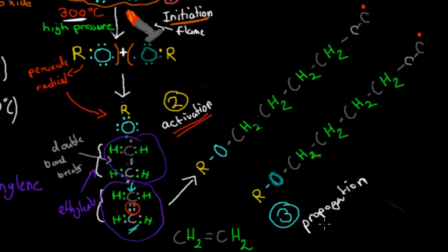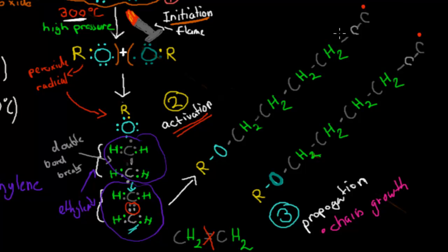The third stage is called the propagation stage. If you look at the structure of these molecules, you'll see that the double bond is now only a single bond because the oxygen destroyed it during activation. The chain is growing longer — chain growth. It might become a thousand monomers long, or even a hundred thousand ethylene molecules joining together.